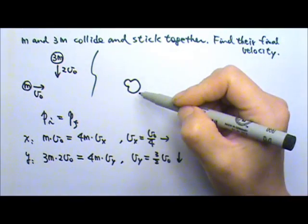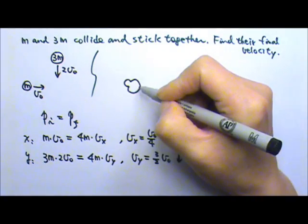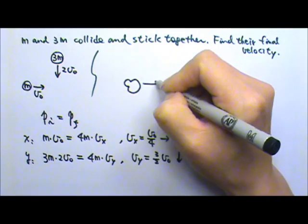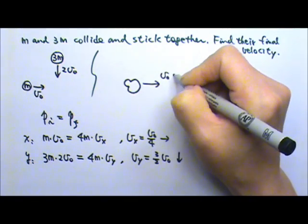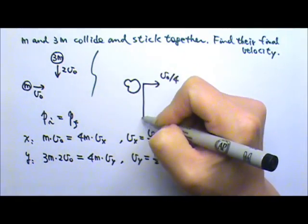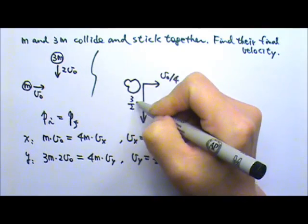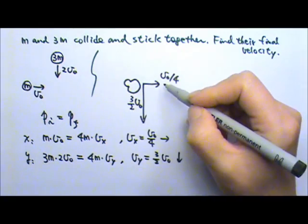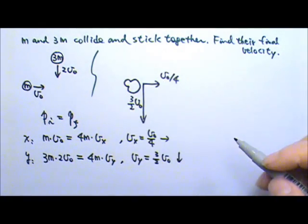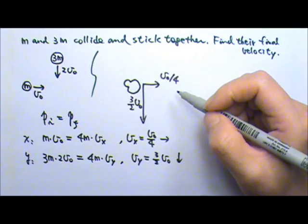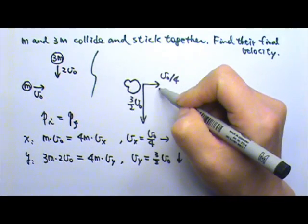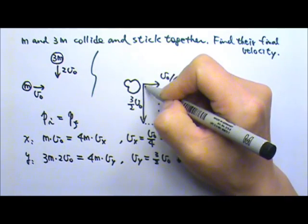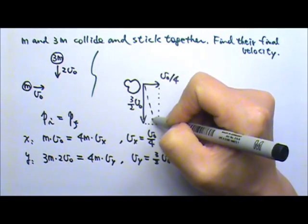So we can answer the final velocity at the end of the collision by components. The two components will be VO over 4 to the east and 3 halves VO to the south. We can answer by components like these two, or we can answer by magnitude and direction. To find the magnitude, we have to add these two components together, and the diagonal is our sum.